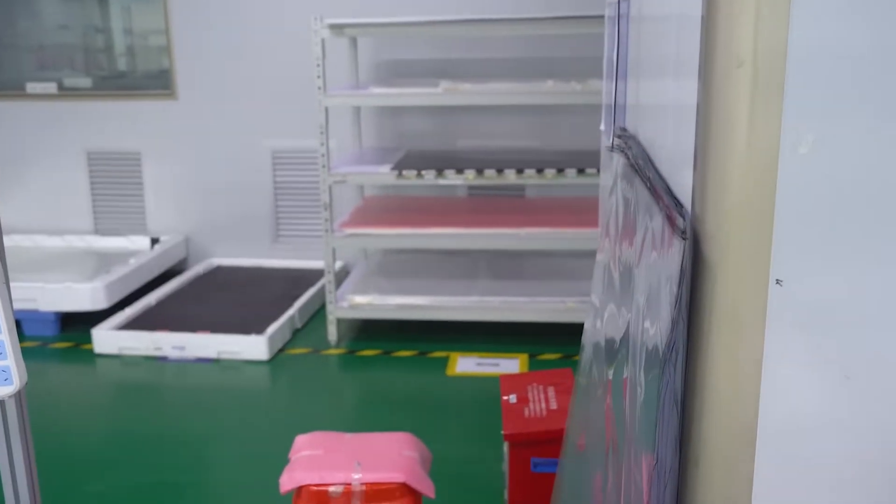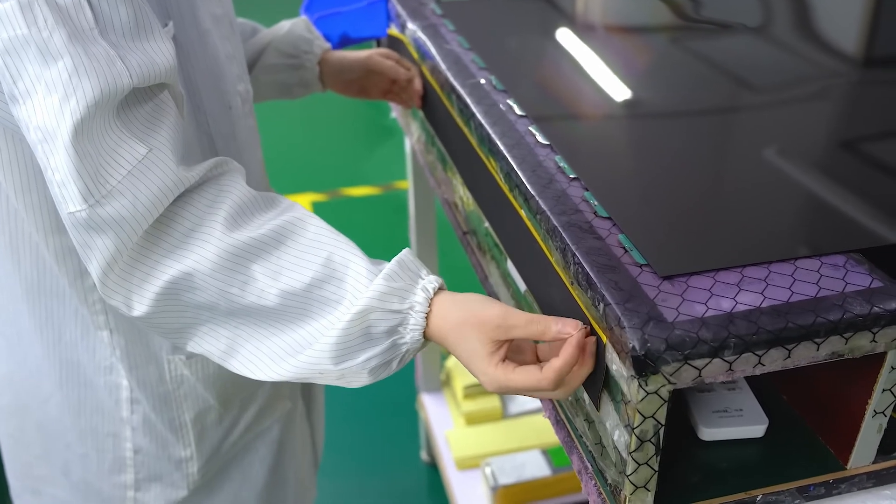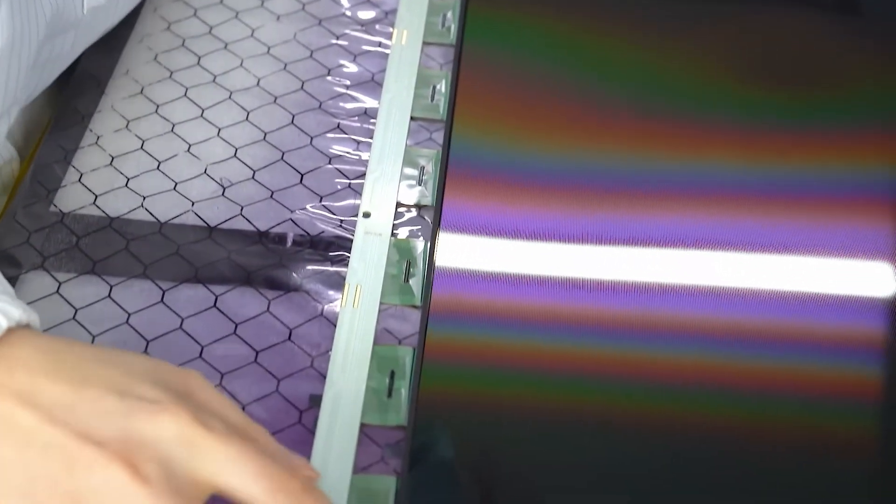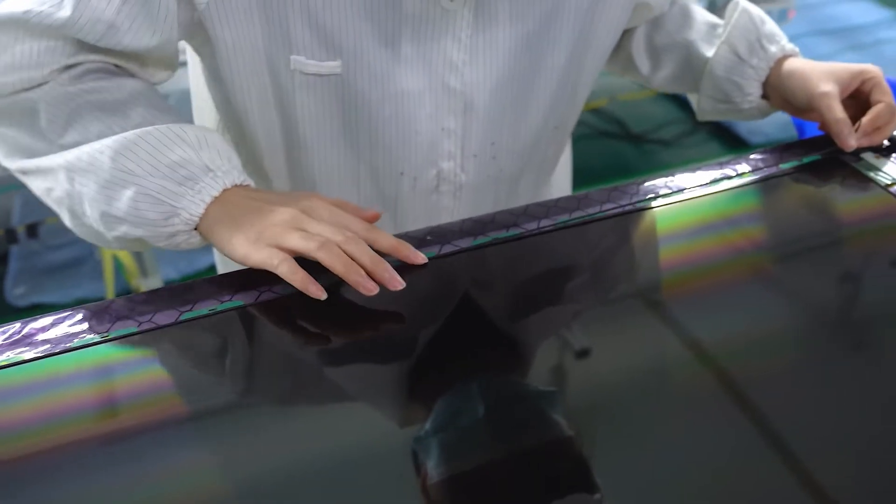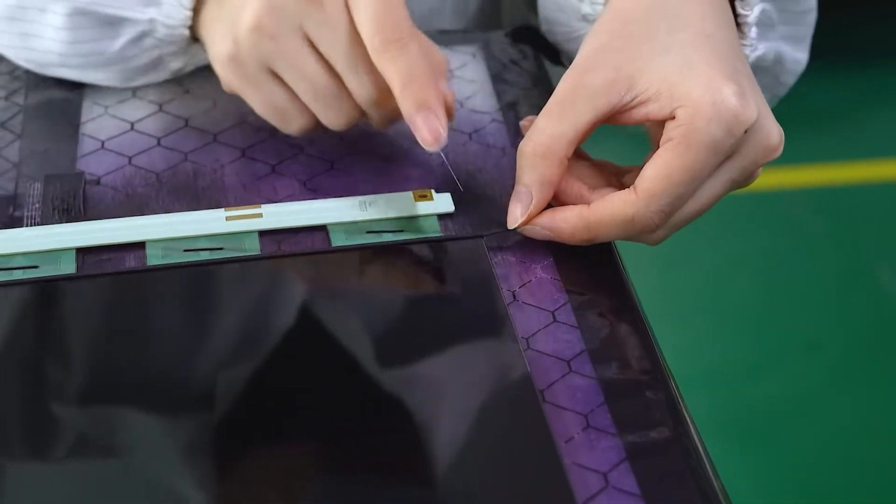The behavior of liquid crystals is what allows the LCD to function. When an electric field is applied, the liquid crystals align in such a way that they either block or allow light to pass through. This controlled manipulation of light is what creates the images you see on the screen.